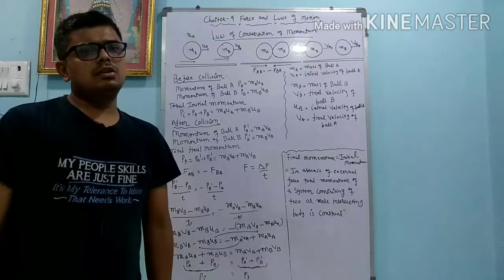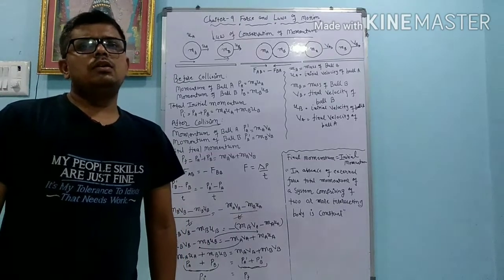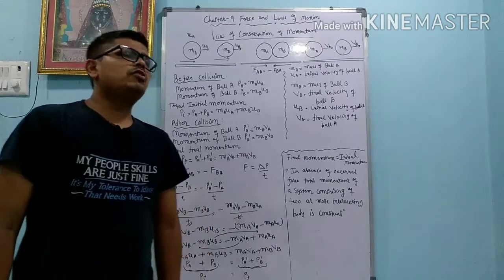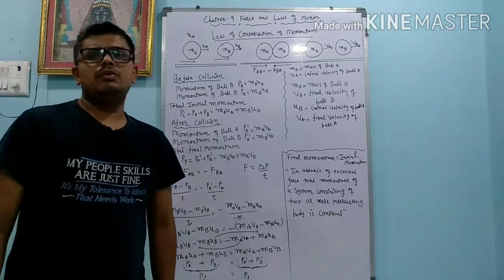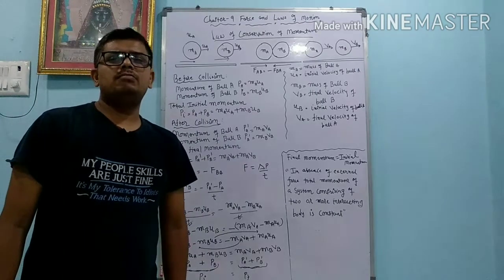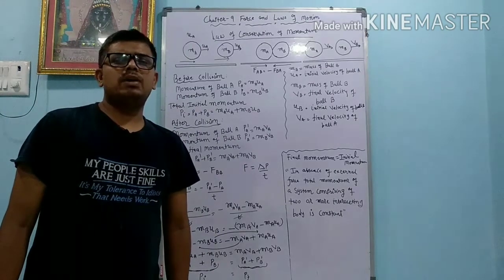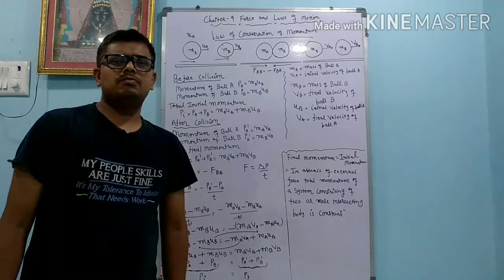Newton's third law: action and reaction are equal in magnitude, but they are in opposite direction. So we can write FAB equals to minus FBA.